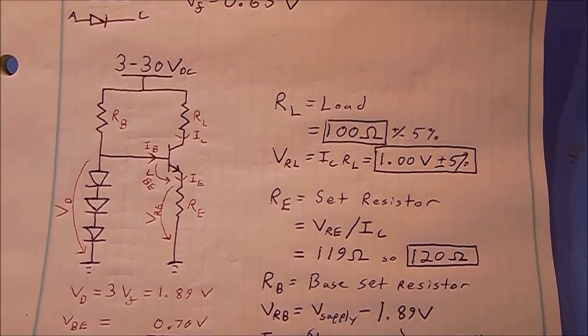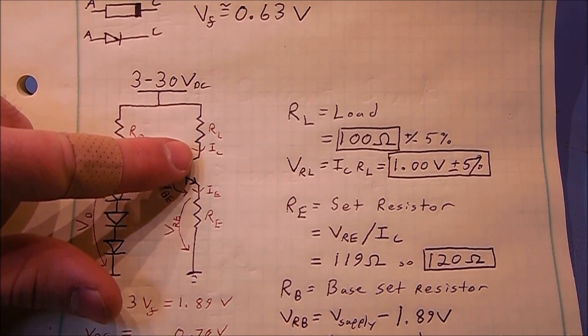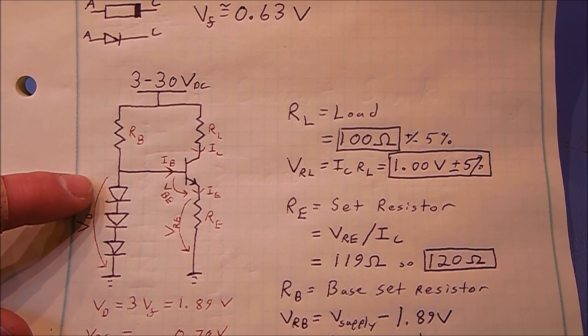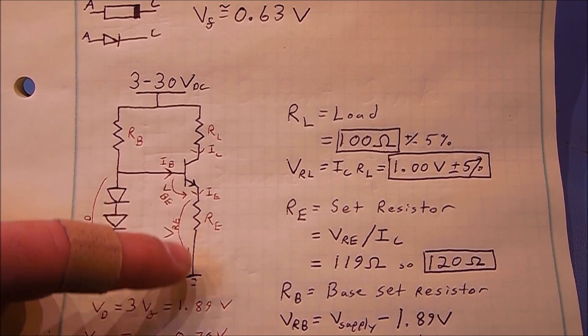Take a look at the circuit. I want to generate 10 milliamps constant current through this load resistor, which I have arbitrarily chosen as 100 ohms. To do that, I chose to have three diodes connected in series from the base to ground.